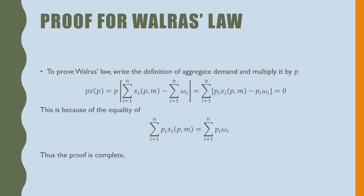To prove Walras's Law, we write that into the definition of aggregate demand and multiply it by P. So we have P times Z, which is equal to P times the summation of all our Marshallian demands minus the summation of all of our endowments, which is equal to the summation of the expenditure on our Marshallian demands minus the expenditure on the endowments. So we have them both next to each other and this is equal to zero. This is because of the equality stated previously: the summation of all of our expenditure on all our Marshallian demands is equal to the expenditure on all our endowments. So the proof is complete.